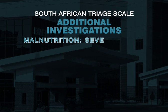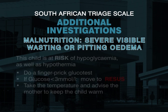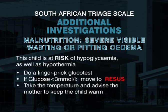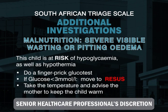Malnutrition — severe visible wasting or pitting edema. This child could be at risk of hypoglycemia as well as hypothermia. Perform a finger prick glucose test, and if the glucose is less than 3 millimoles per litre, move to the resuscitation area. Take the temperature and advise the mother to keep the child warm. Hand over to the senior healthcare professional.